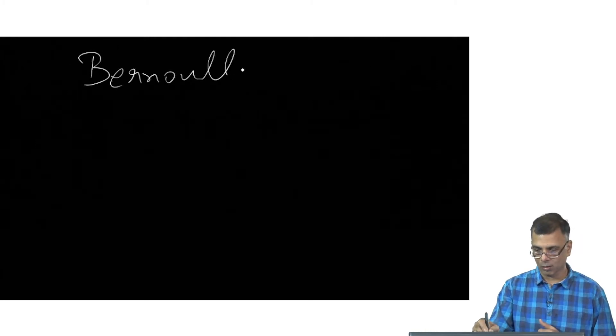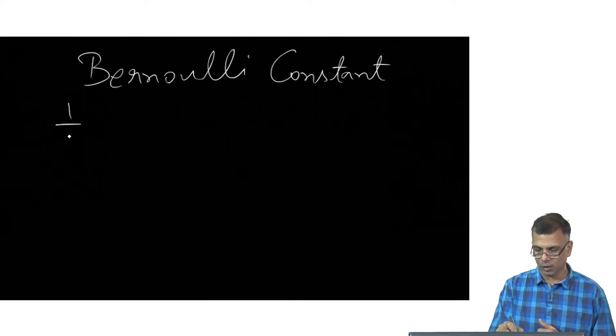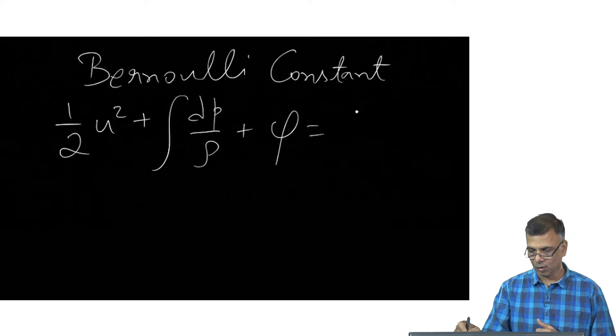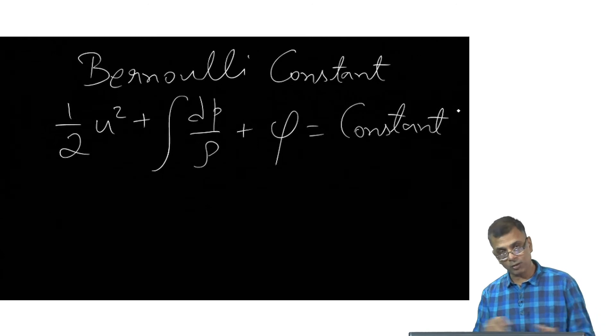We also remark that we already had seen the energy equation in a slightly different guise in the form of Bernoulli constant where you remember this. The Bernoulli constant is something like one half u squared plus gravitational potential. This is true, however, only for a streamline...